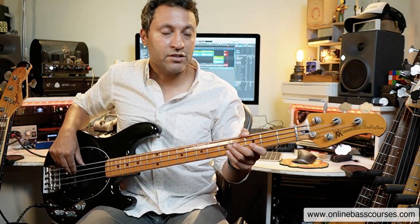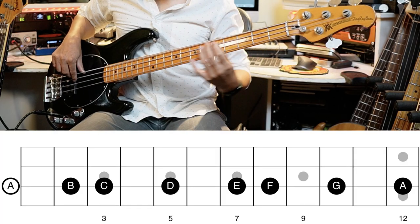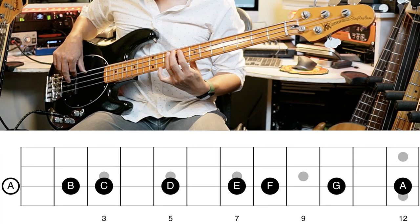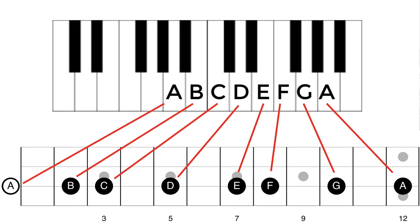Let's go back to your bass. Let's go to A. Now those are all those natural notes — the white ones — on the A string. Going across: A, B, C, D, E, F, G, A.